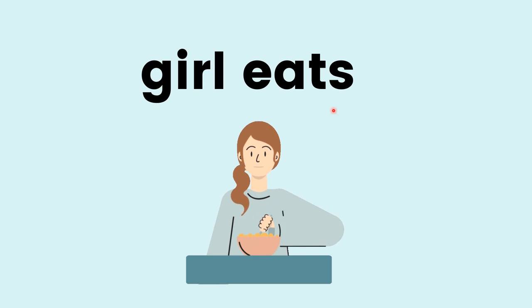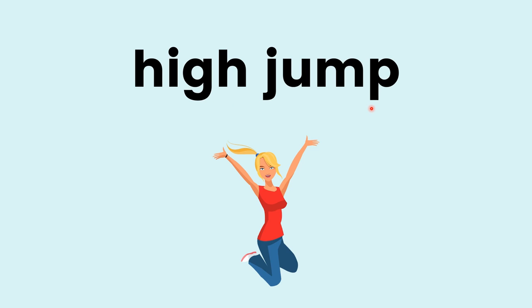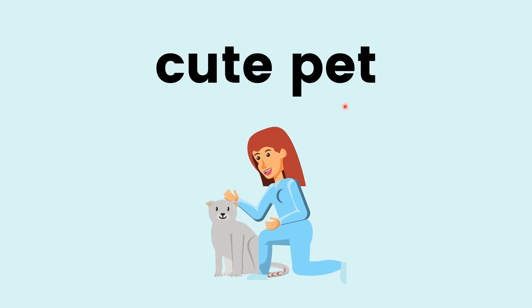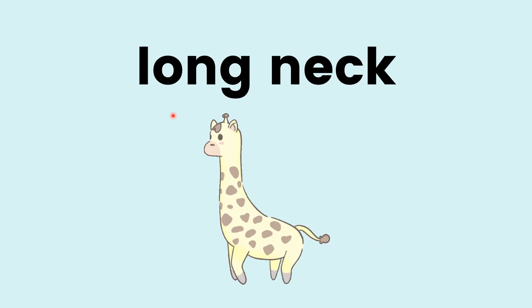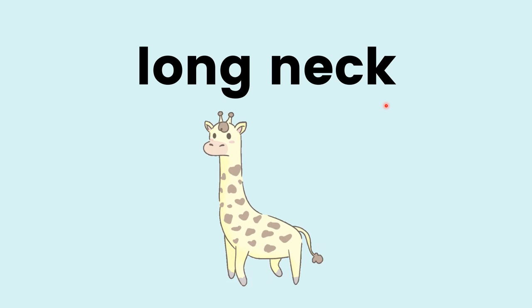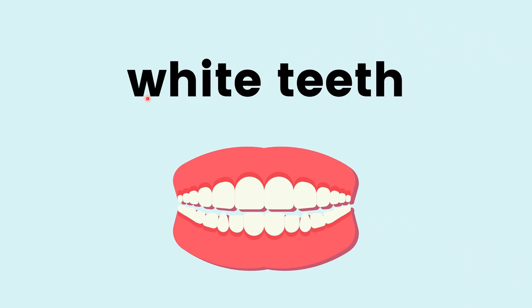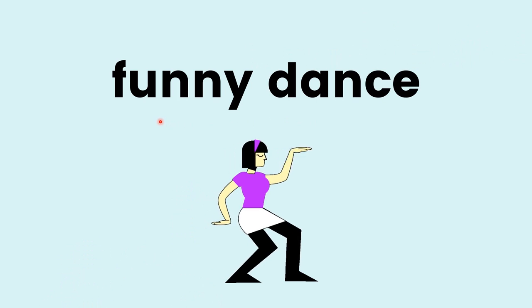Girl sits. Boy slips. High jump. Nice works. Cute pet. Mad lion. Long neck. Black. Big elephant. White tit. Teaches well. Funny dance.